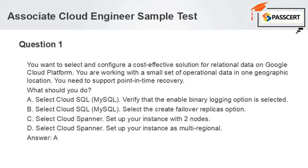C. Select Cloud Spanner. Set up your instance with two nodes. D. Select Cloud Spanner. Set up your instance as multi-regional. Answer: A.